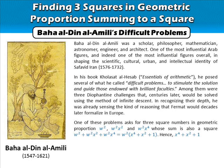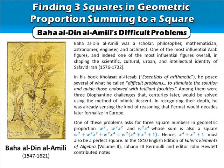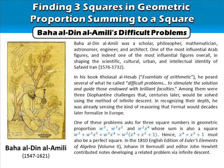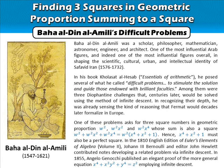Hence, a fourth power plus a square plus one must also be a perfect square. In the 1810 English edition of Euler's Elements of Algebra, Volume 2, Johan III Bernoulli and editor John Hewlett contributed notes developing a related problem via infinite descent. In 1855, Angelo Genocchi published an elegant proof of a more general equation employing infinite descent.